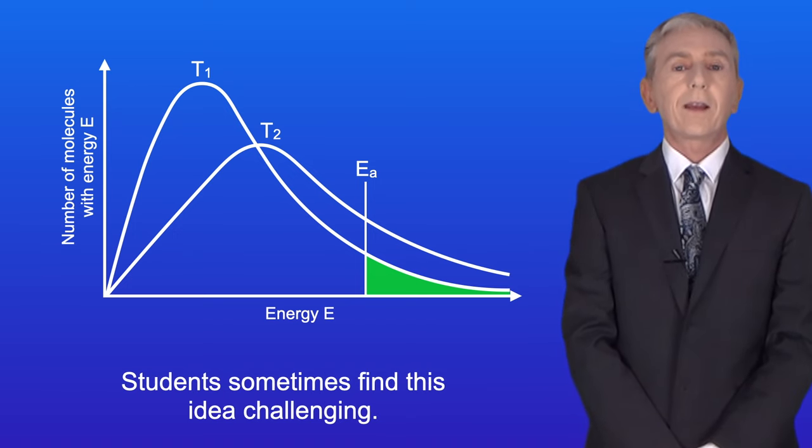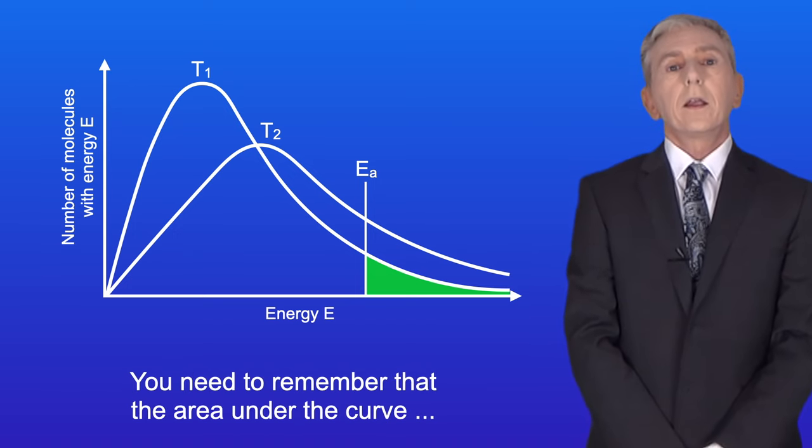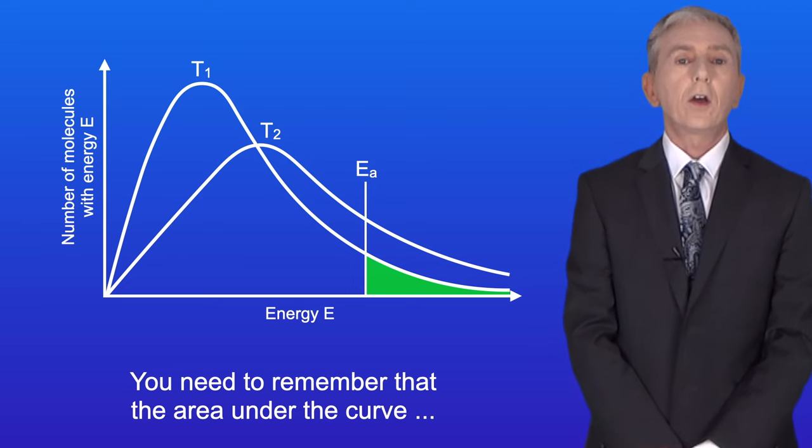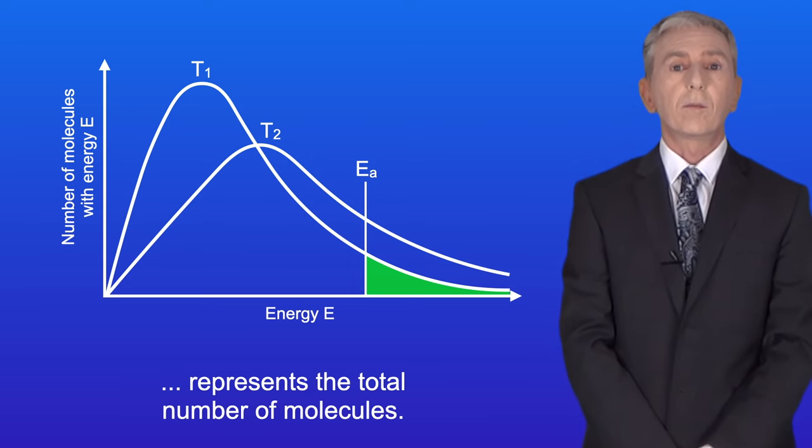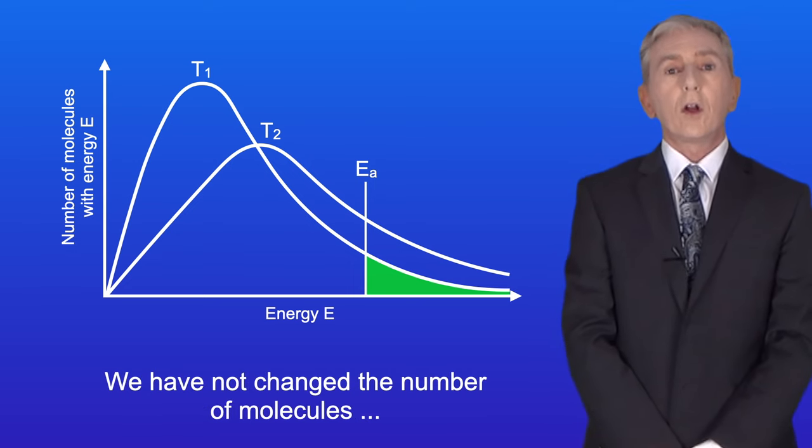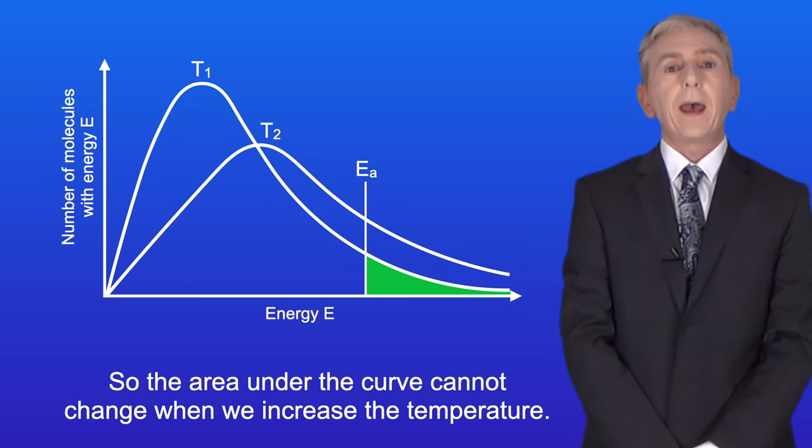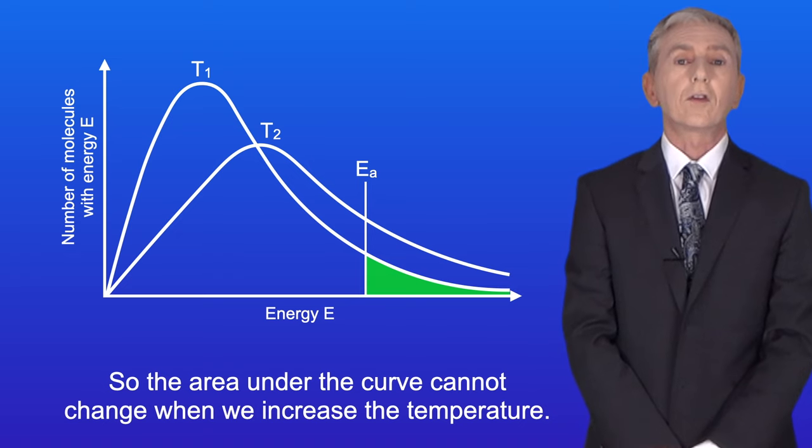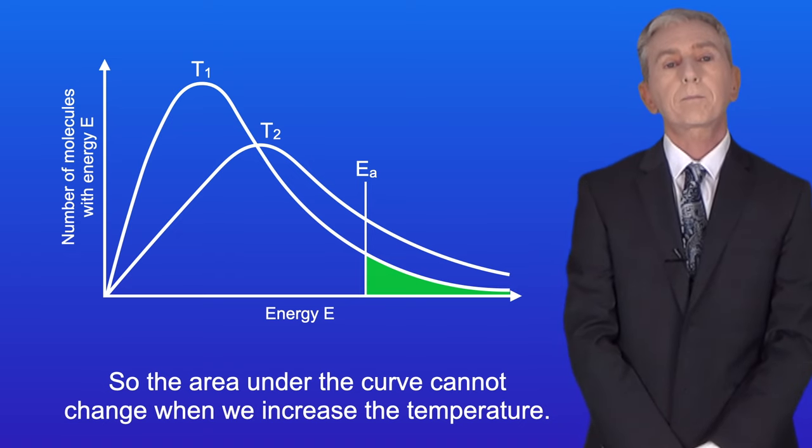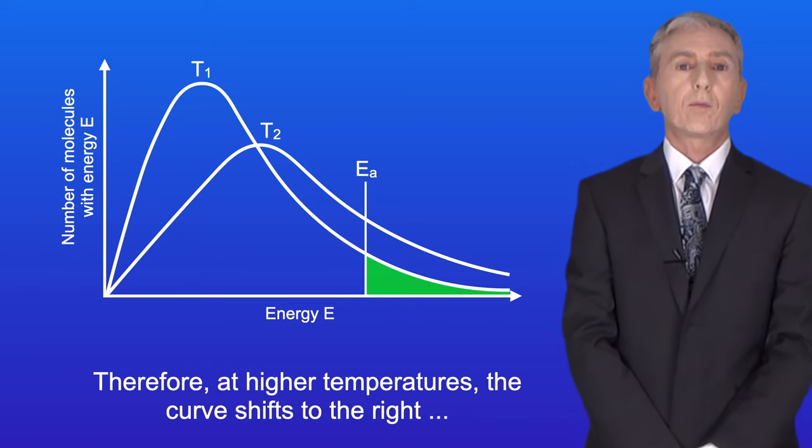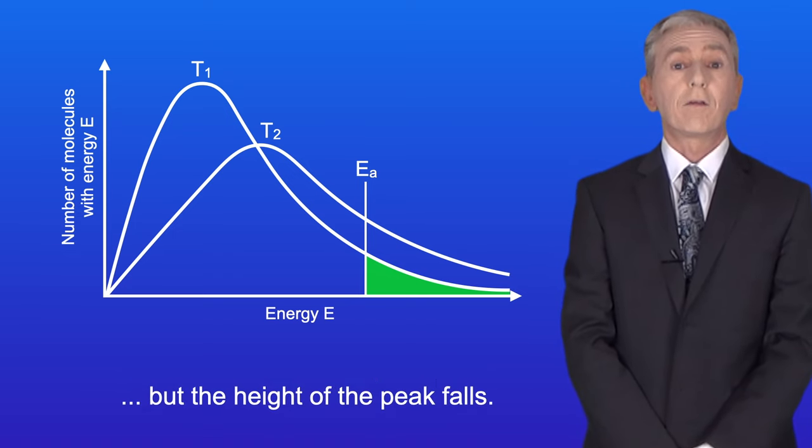Students sometimes find this idea challenging. You need to remember that the area under the curve represents the total number of molecules. We have not changed the number of molecules, we've only increased the temperature. So the area under the curve cannot change when we increase the temperature. Therefore, at higher temperatures the curve shifts to the right, but the height of the peak falls.